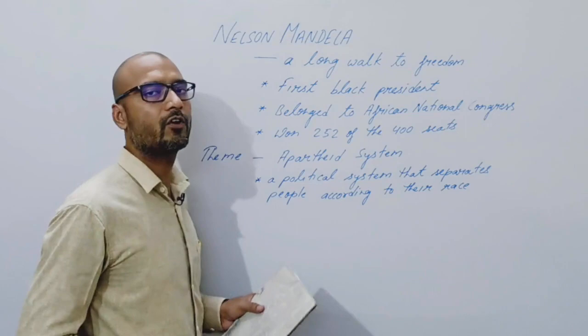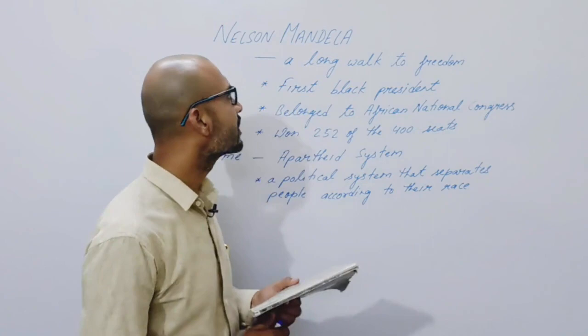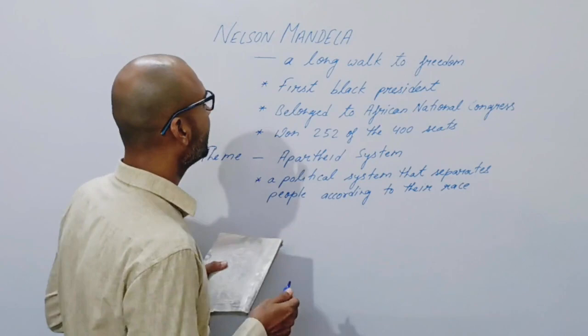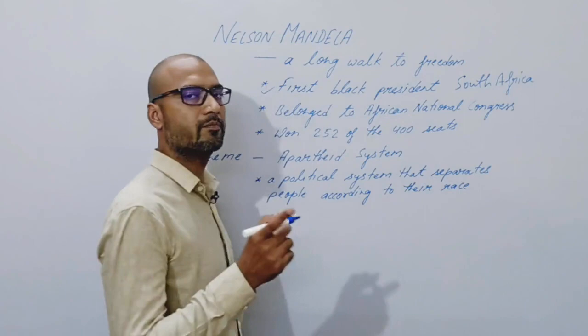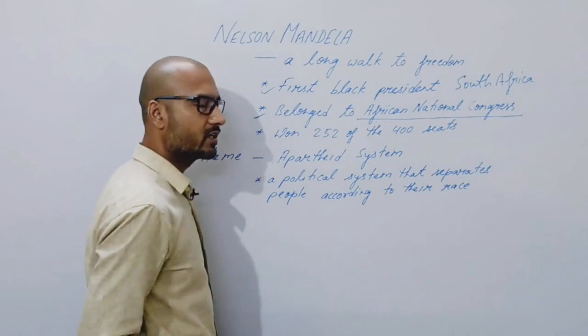Toh chaliye shuru karta hoon. Yeh chapter Nelson Mandela: Long Walk to Freedom — yeh chapter unki autobiography hai. We are going to talk about the first black president, and where are they from? South Africa. South Africa's first black president, and he belonged to the African National Congress.